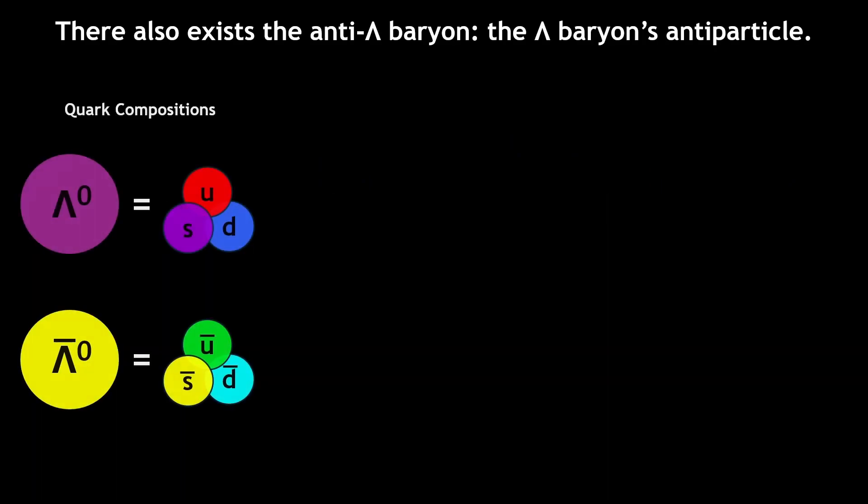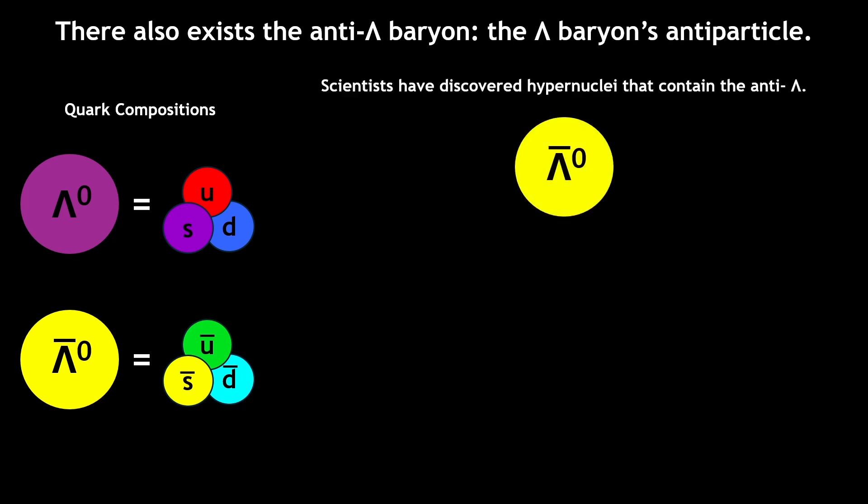But the discoveries don't end there. There also exists the anti-lambda baryon, which is the lambda baryon's antiparticle. Moreover, scientists have discovered the anti-lambda baryon in anti-hypernuclei.